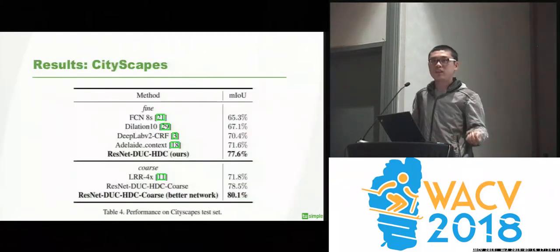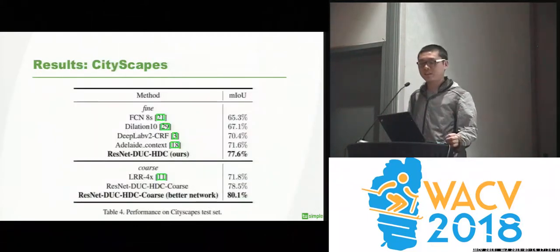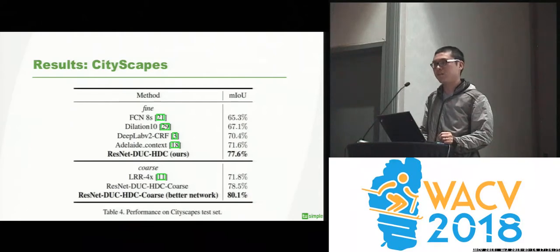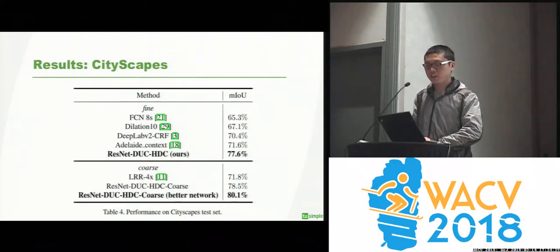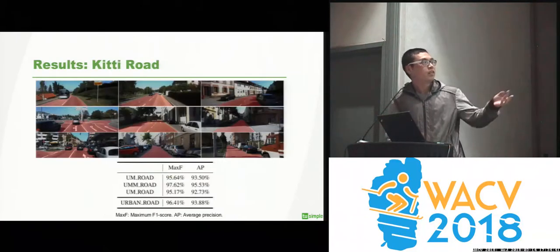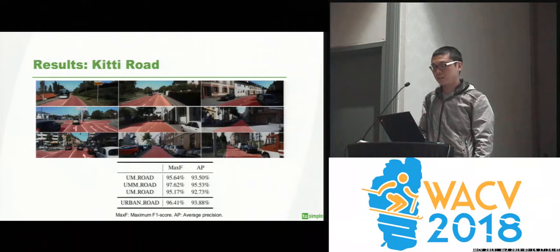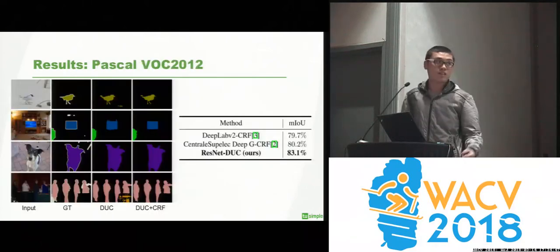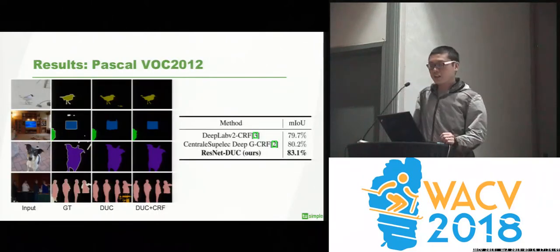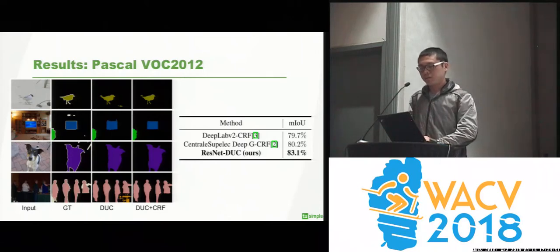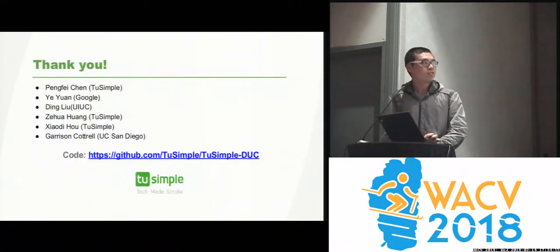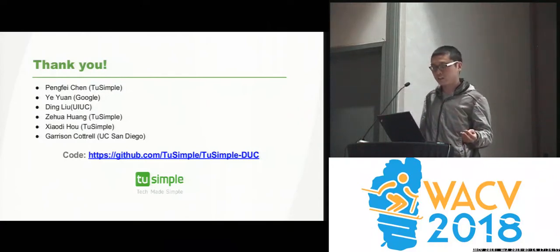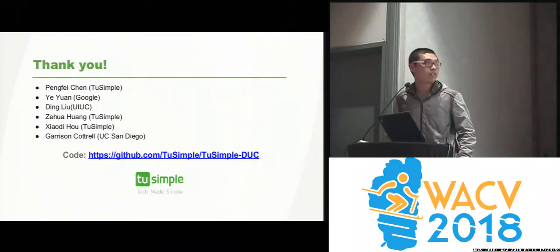We tested our technique on three different datasets. On Cityscapes, a popular dataset for urban driving, on KITTI Road for road segmentation, and on Pascal VOC — we achieved state-of-the-art performance at the time of submission for all of them. Our code is available online on GitHub if you are interested.